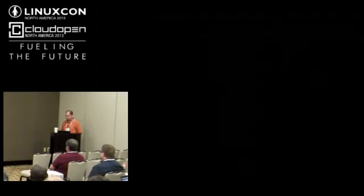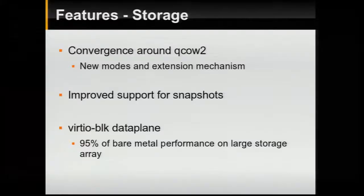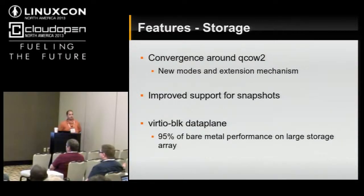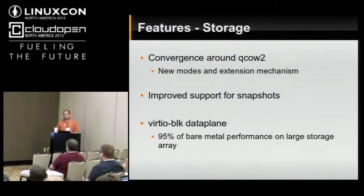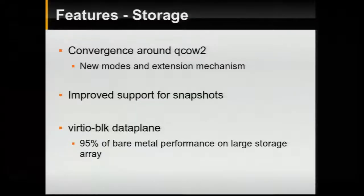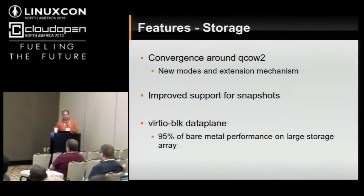There's also significantly improved support for snapshotting. The preferred way of doing snapshotting in QEMU is still what we call external snapshots — snapshots that are visible in the file system. The general problem with image formats is that they are essentially file systems, and making an image format from scratch is just as complicated. One of the things happening right now in QCOW2 is journal support to have a full transaction journal. We try to leverage the host file systems as much as we can, which is why we prefer external snapshots.